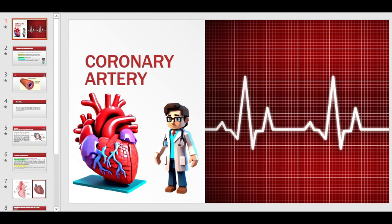The heart's function is to circulate and pump blood through your body. Since the heart is an organ, it can only function when its oxygen requirements are met. An organ needs oxygen and nutrients to function. Therefore, the heart also needs a proper blood supply for its functioning, and that blood supply is provided through the coronary arteries.